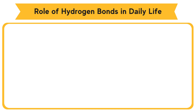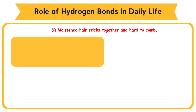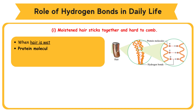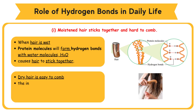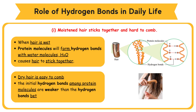Role of hydrogen bonds in daily life. First: moistened hair sticks together and is hard to comb. When hair is wet, protein molecules no longer form hydrogen bonds among themselves. Instead, protein molecules will form hydrogen bonds with water molecules H2O, and water molecules will also form hydrogen bonds with other hair protein molecules. This causes hair to stick together. Dry hair is easy to comb because the initial hydrogen bonds among protein molecules are weaker than the hydrogen bonds between water and protein molecules.